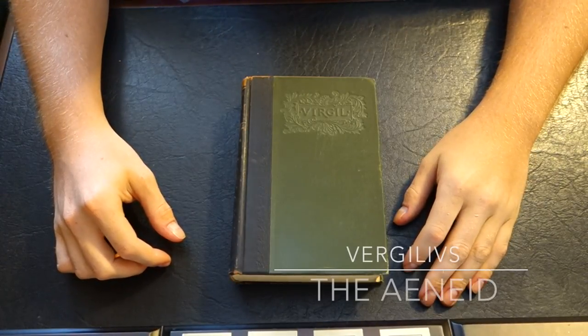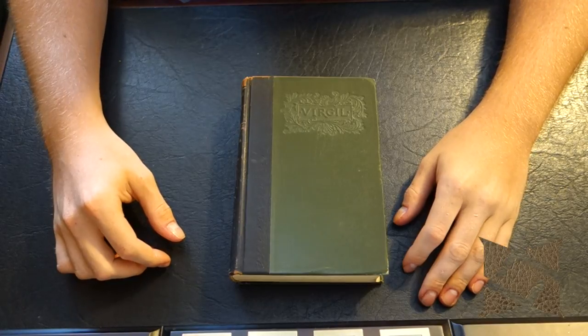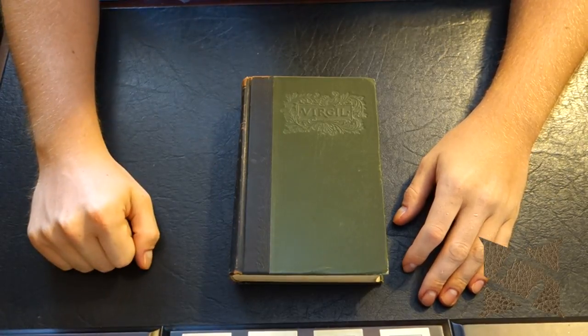Welcome back YouTube. Today we're taking a look at another antiquarian book that I purchased from abebooks.com. This is Virgil's the Aeneid.